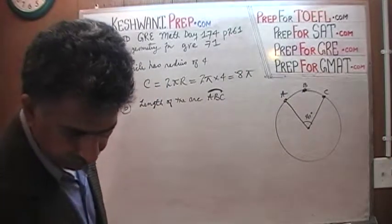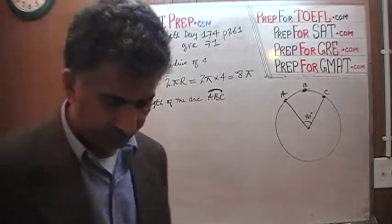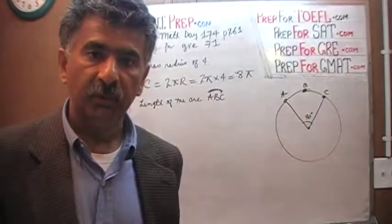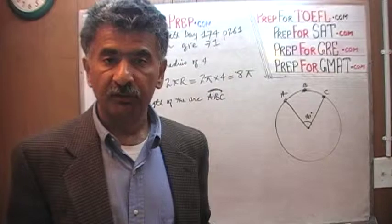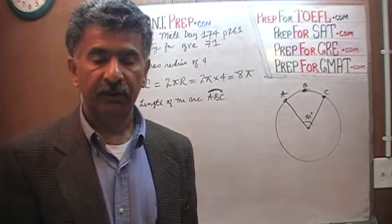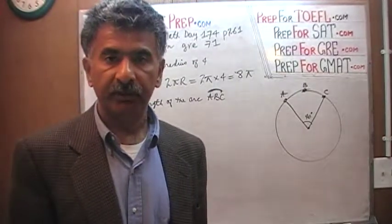Arc ABC, the length of the arc ABC. Now there are a couple of ways we can solve this problem. One way is to figure out this arc represents what proportion of the circle and just find that proportion, or second, set it up as a ratio problem.